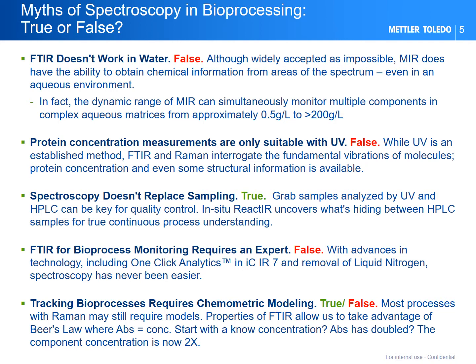The assumption that spectroscopy doesn't replace sampling is actually true. Grab samples analyzed by UV and HPLC can be key for quality control, and React-IR uncovers what is hiding between HPLC samples for true continuous process understanding. With advances in technology — including one-click analytics in iCIR-7 and removal of liquid nitrogen — spectroscopy is actually much easier, as we will demonstrate later on.